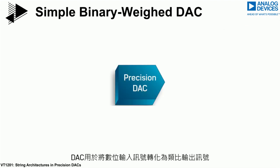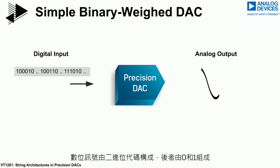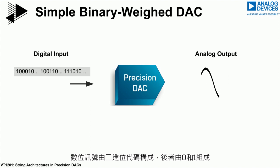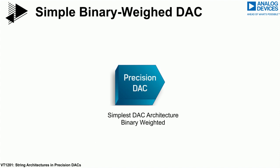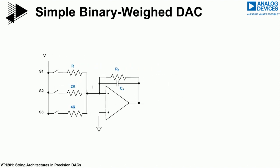A DAC is used to convert a digital input signal into an analog output signal. The digital signal is set by a binary code that is a combination of ones and zeros. A simple DAC can be easily implemented using a binary weighted network.